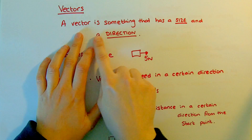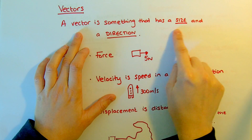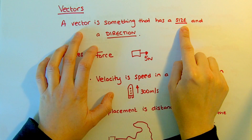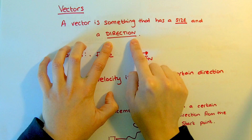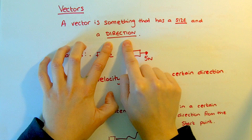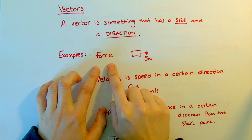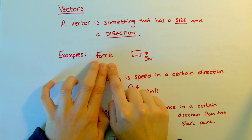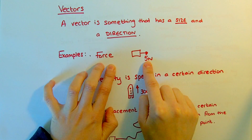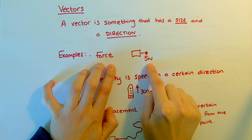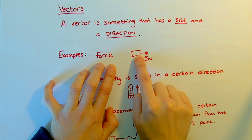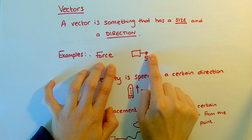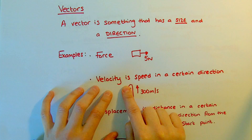So, vectors. A definition of a vector is something that has a size and a direction. For example, force is a vector that has a size — for example, 5 newtons — and a direction, in this case to the right.